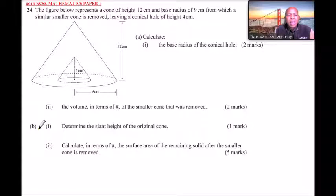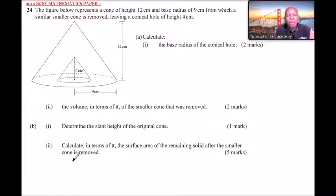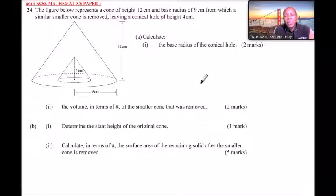Roman numeral two carries two marks. Part B, roman numeral one: determine the slant height of the original cone — you get one mark. Roman numeral two: calculate in terms of pi the surface area of the remaining solid after the smaller cone was removed — you get five marks.